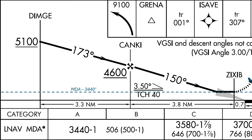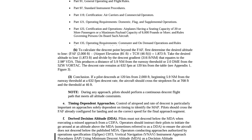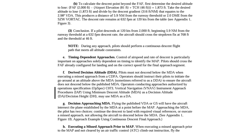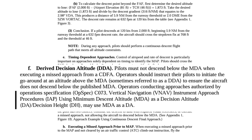So how should we use the advisory glide path in our missed approach execution? The FAA defines something called a derived decision altitude. It provides guidance to commercial operators in advisory circular 120-108. Many commercial operators incorporate the derived decision altitude into their SOPs called OPSPECs, making their use required.